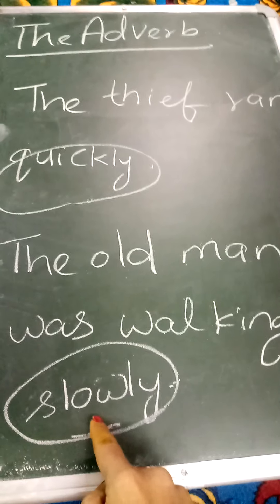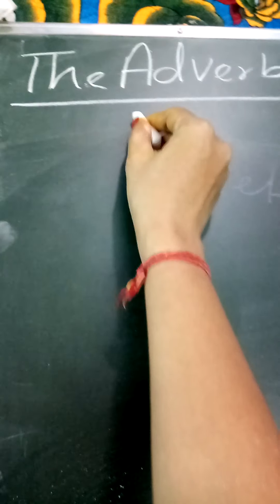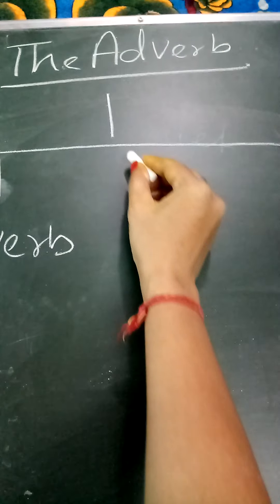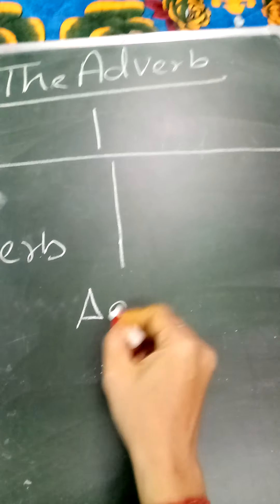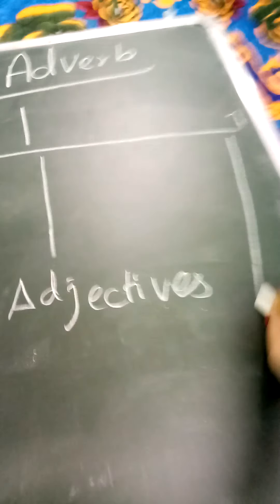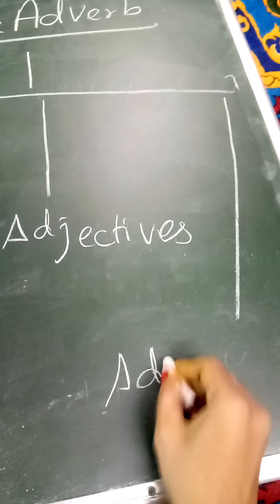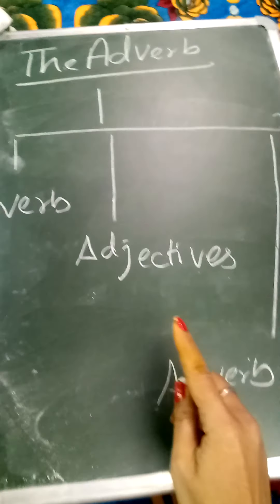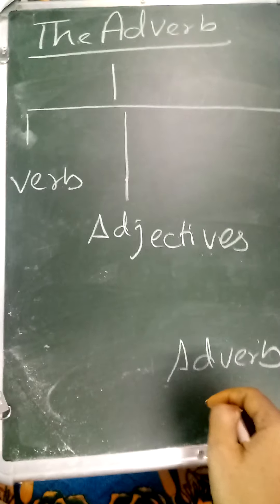Clear? So, adverb jo hai woh describe karta hai — verb ko, adjective ko, or another adverb ko. Yani, adverb jo hai woh verb mein meaning add karta hai, adjectives ko — sentence mein agar adjectives hain — and another adverb, yani ek aur adverb ko. Ab kaise? I will tell you. So adverb describes verb, adjective, and another adverb. Let's watch.